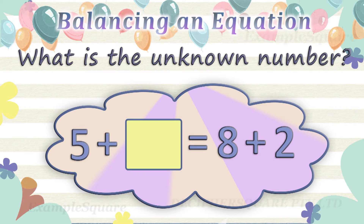In this equation, the left side is 5 plus an unknown number and the right side is 8 plus 2. 8 plus 2 on the right side equals 10. For this equation to balance correctly, the left side should also be equal to 10. The left side is 5 plus an unknown number. 5 plus 5 equals 10, so the unknown number here is 5.